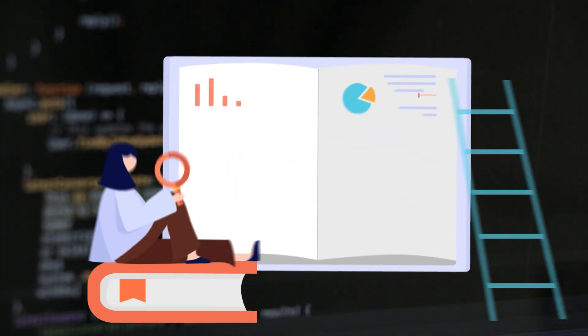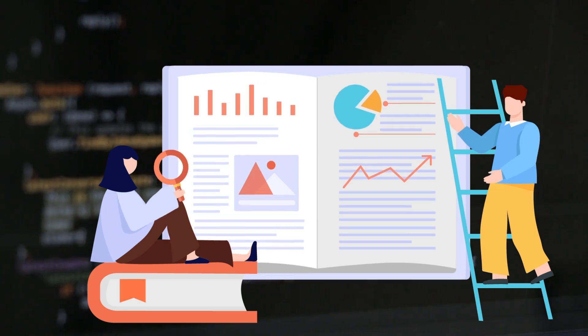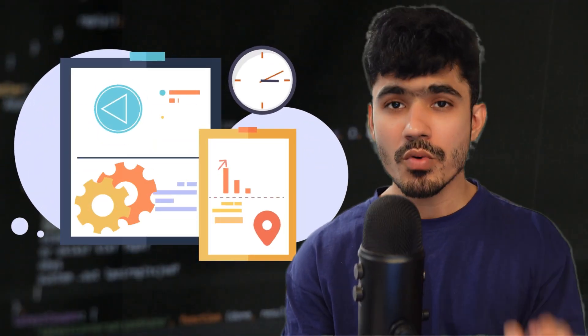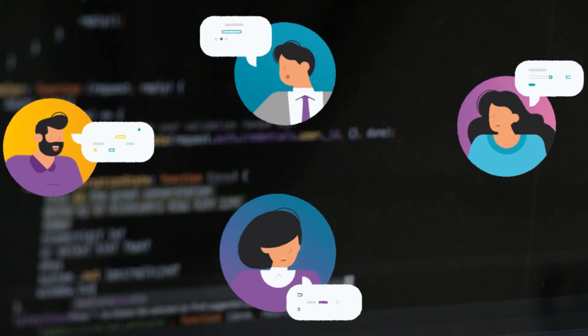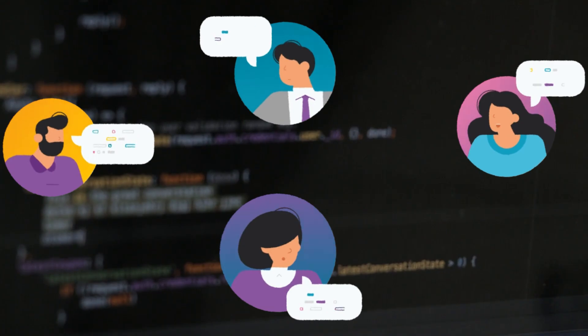At the end of the day, you need to understand that whatever tools or title you have, your goal is to create an impact for the business and help them achieve their outcomes. It doesn't matter if you are a data engineer, data scientist, or machine learning engineer — your role is to do work that actually has an impact. There is no best role: data engineering is not better than data science or data analyst. Pick what you really like working on and start your career from there.